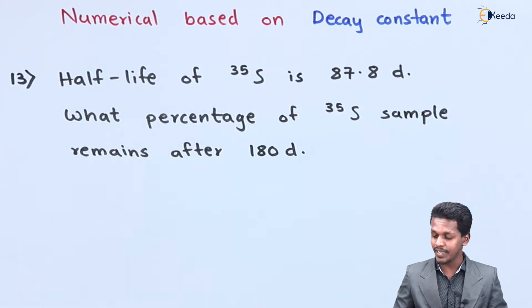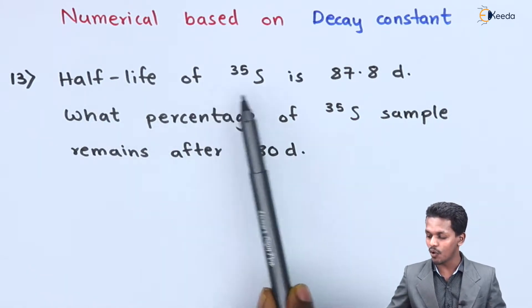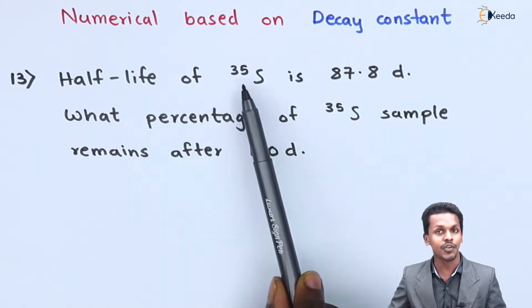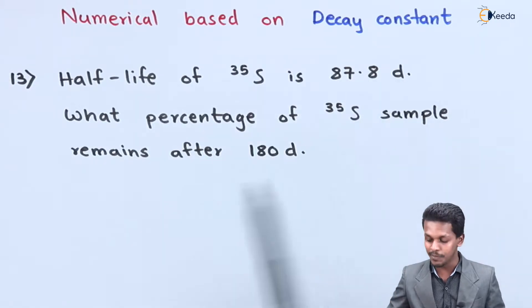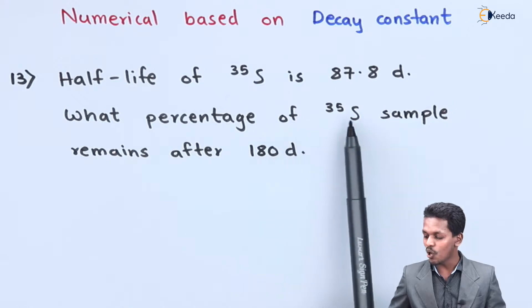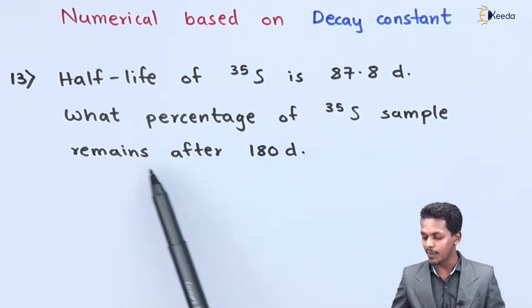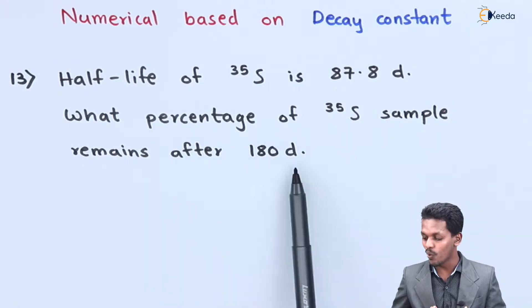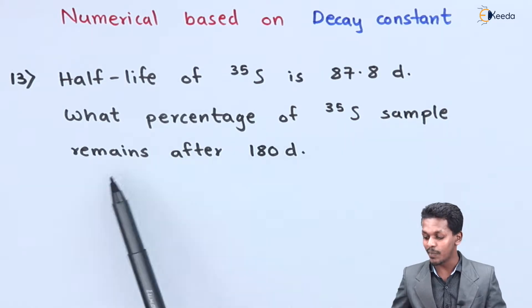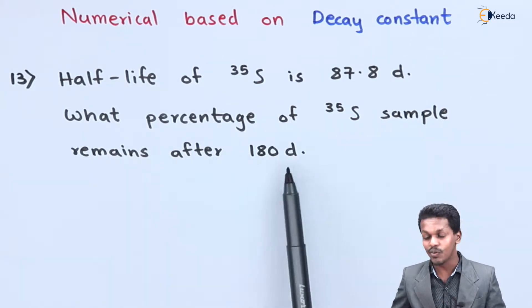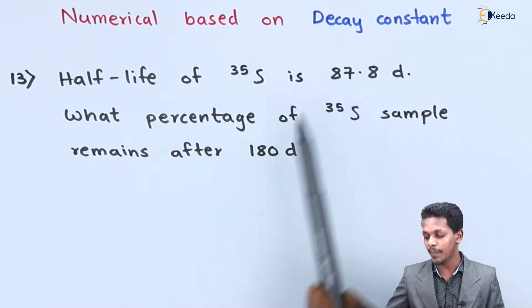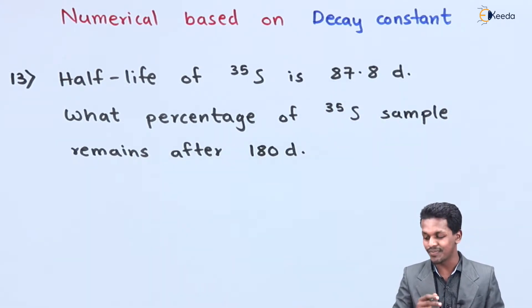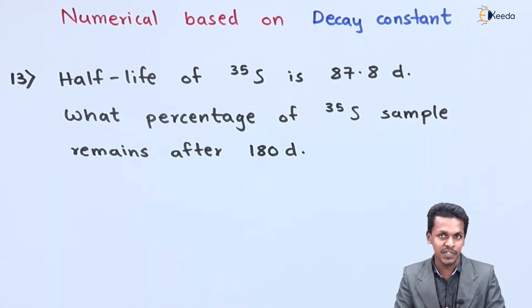The question given here is that the half life of sulphur having an atomic mass of 35 is 87.8 days. So what percentage of the sulphur-35 sample remains undecayed after 180 days? Let us extract what data we can find from this question.